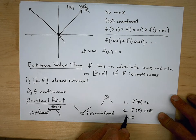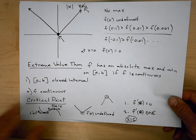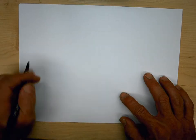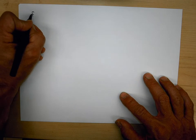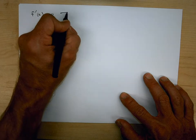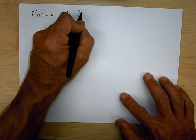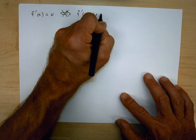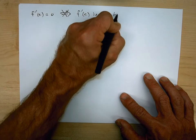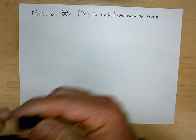So the question is how do we find those critical points? Because those would be places where we might have a maximum or a minimum. The other thing I want to point out is: just because f prime of c equals zero does not imply that f of c is a relative min or max.